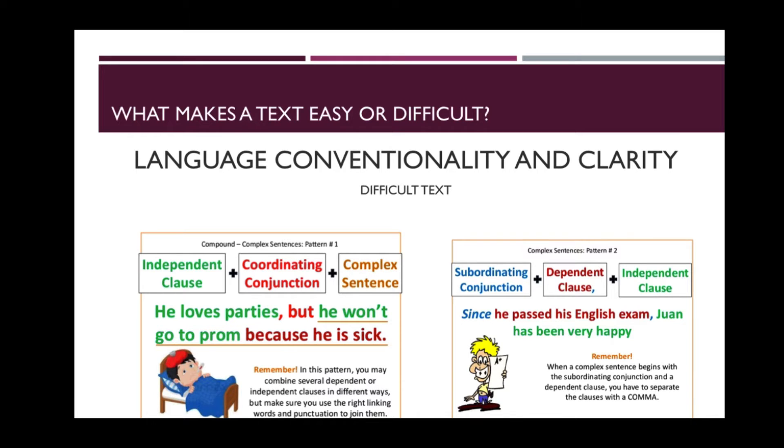The language conventionality and clarity of difficult text is complex as can be seen in pattern one, where you have a compound complex sentence example. Independent clause plus a coordinating conjunction plus a complex sentence: He loves parties, but he won't go to prom because he is sick.